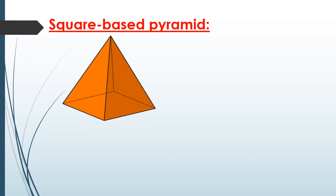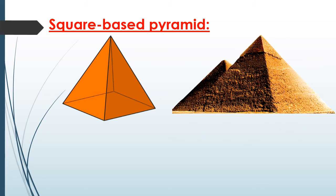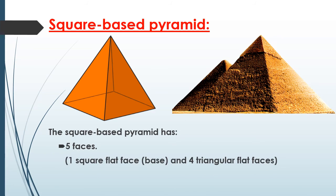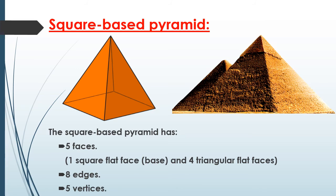The square base pyramid is like the Giza pyramids. It has five faces: one square flat face as the base, and four triangular faces. It has 8 edges and 5 vertices.